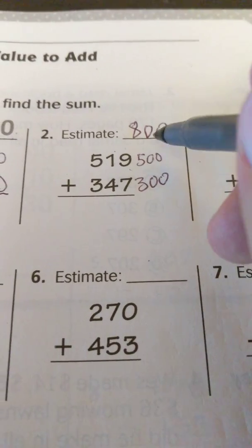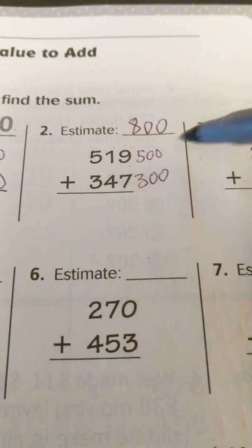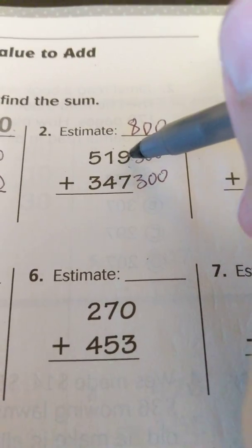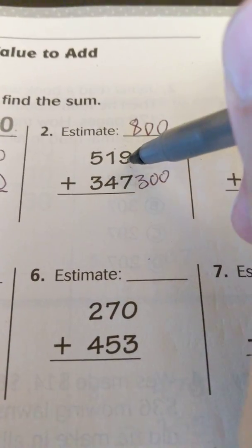So 500 plus 300 is 800. That would be the first step, find the estimate of the answer. I'm going to go ahead and continue to solve here.